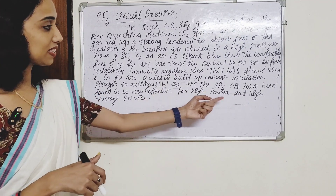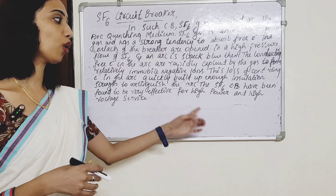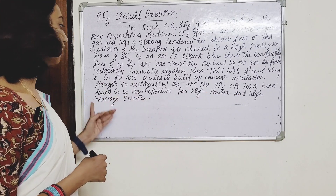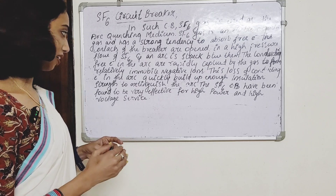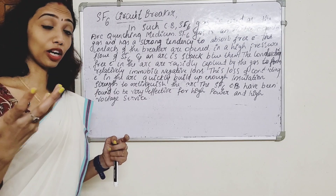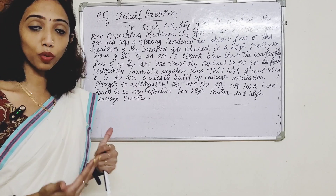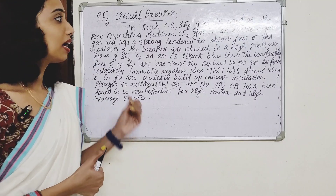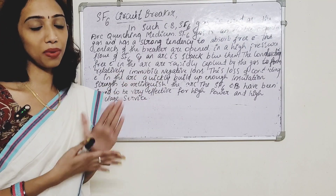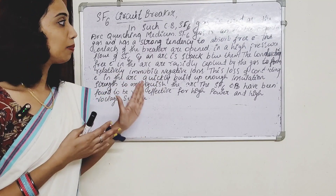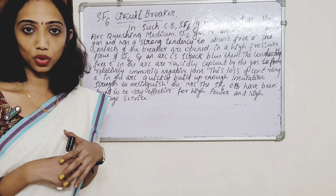The SF6 circuit breaker has been found to be very effective for high power and high voltage service, and is mostly used in high power and high voltage applications. I will explain to you about the construction, working, advantages, and disadvantages.